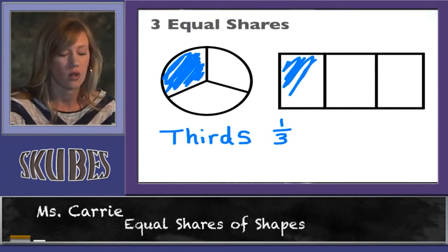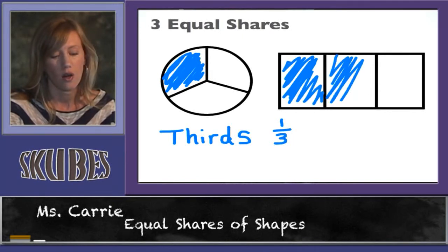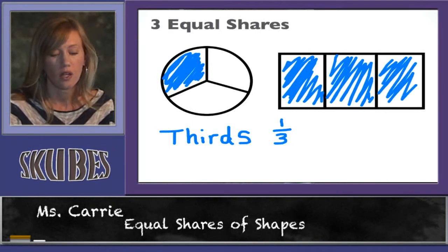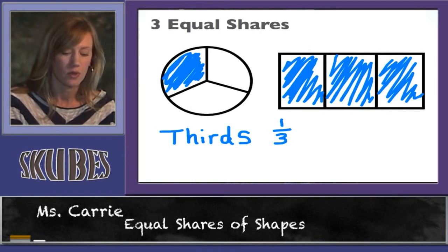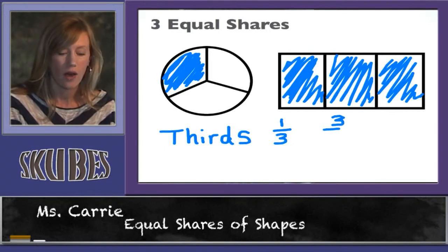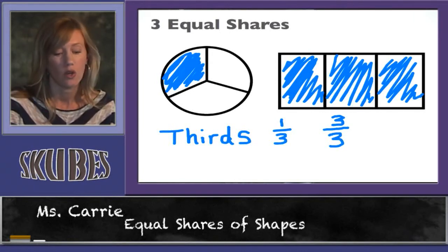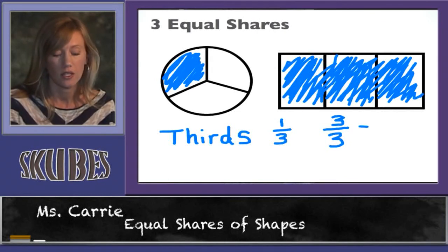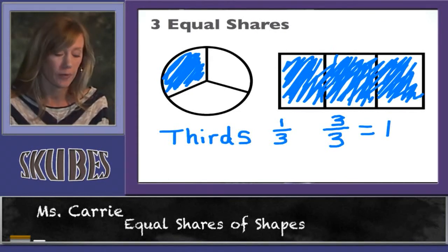Let's color in this rectangle like we did the last one. All of the parts. So here we colored in three parts. Three is the amount we colored out of, your line right there means out of, three parts that were all together. Which as we talked about before was the same thing as one whole. That's equal to one.